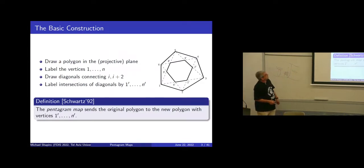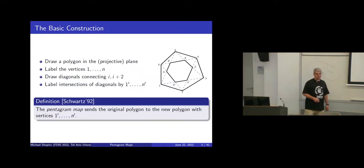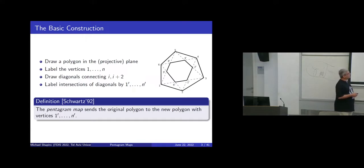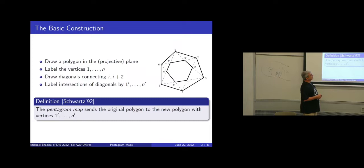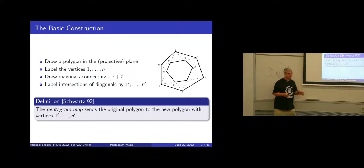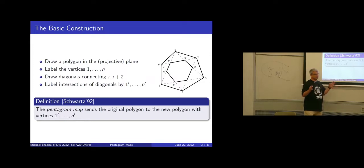Let me start with a basic construction that almost all of you have seen. Rick Schwartz in 1992 introduced something he calls the pentagram map, which is a very simple geometric game. You start with an n-gon in a plane, consider short diagonals — you skip one point and connect neighboring points by a diagonal. These diagonals cross, and inside the original n-gon you get a smaller n-gon. This defines a map on the space of n-gons taking a bigger one to a smaller one.